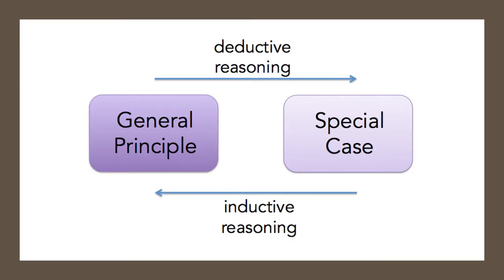We have two kinds of reasoning: inductive reasoning and deductive reasoning. For deductive reasoning, from a general principle you use that to prove the special case. For inductive reasoning, if it is true for the special case, you try to generalize it for the entire thing.